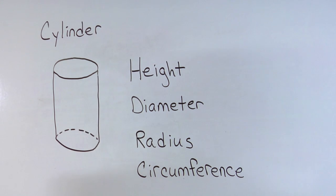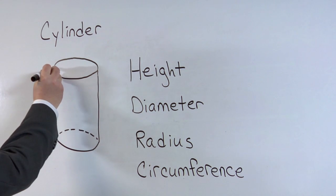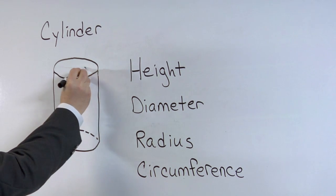The diameter is equal to the width, which would be the line straight across.